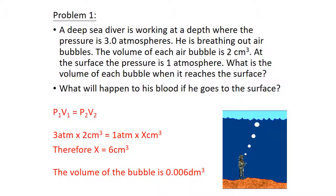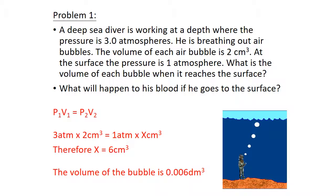Using P₁V₁ = P₂V₂: 3 atmospheres times 2 cm³ equals 1 atmosphere times x cm³. Therefore x equals 6 cm³. As the bubble rises to the surface, it increases in size because there is less pressure pushing on it.